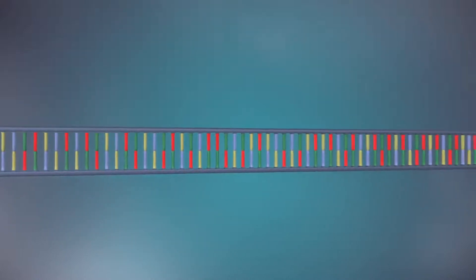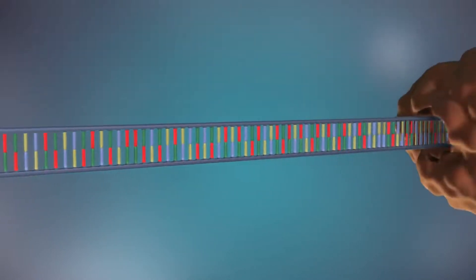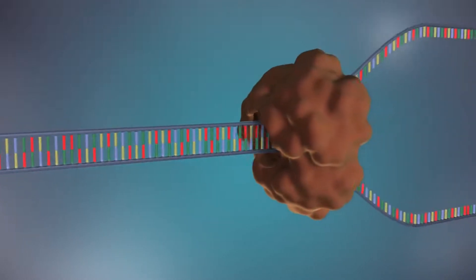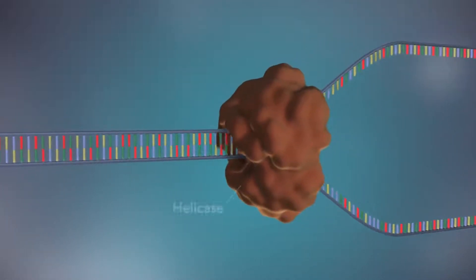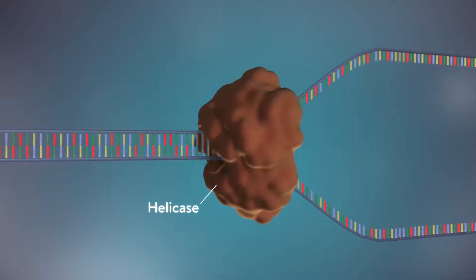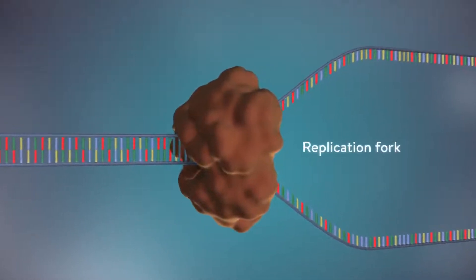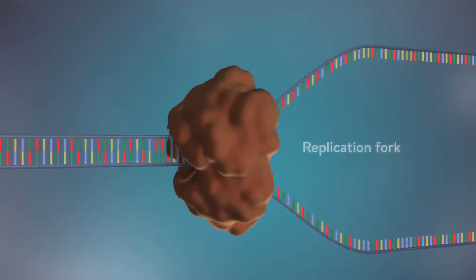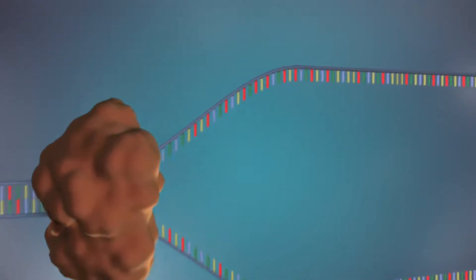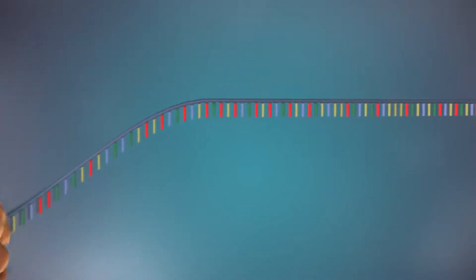The first step in DNA replication is to separate the two strands. This unzipping is done by an enzyme called helicase and results in the formation of a replication fork. The separated strands each provide a template for creating a new strand of DNA.